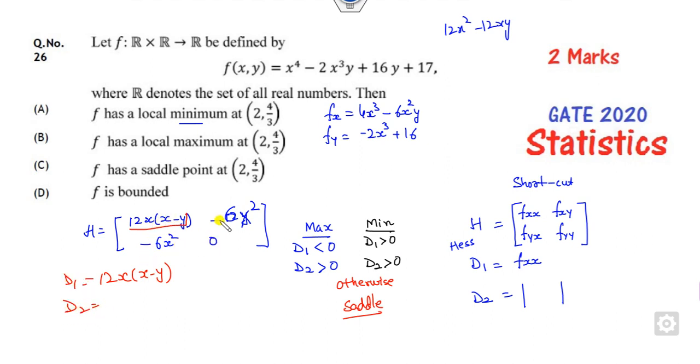D₂ is 0 - this is minus -36x⁴. So this is always less than 0. But you can see none of the case will be that second minor is less than 0. What is the meaning of that? The point is my saddle point.